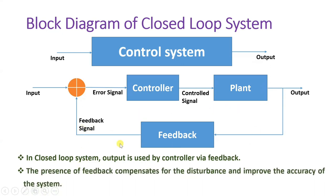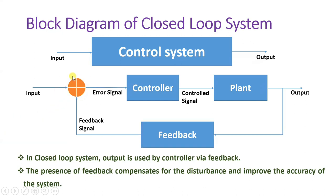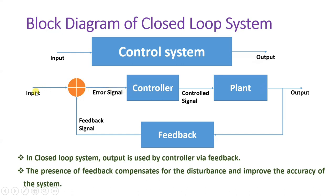Due to feedback, the system will compensate for disturbances happening at the output side. As we compensate for disturbances at the output side, you will find the accuracy of the closed-loop system is far greater than that of the open-loop system. The basic block diagram of the closed-loop system has two additional elements compared to open-loop: one is feedback, and the second is the error detector. The controller input is the error signal, which is the difference between the input and feedback signal. These are the key differences between open-loop and closed-loop systems.